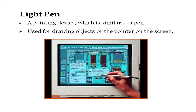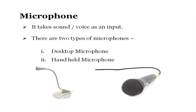The light pen is a pointing device similar to a pen, used for drawing objects or pointing on the screen. It is used by designers to directly make markings and draw figures on the screen. A microphone is another commonly seen device — it takes sound and voice as input. There are two types shown on the screen: the handheld microphone and the desktop microphone fixed on the desktop. You can record your sound through the microphone and save it in the form of audio files for future use.